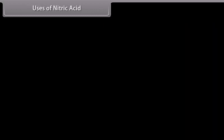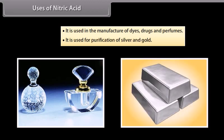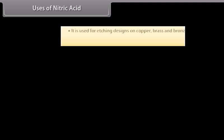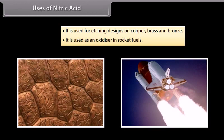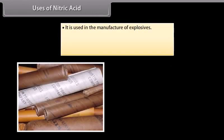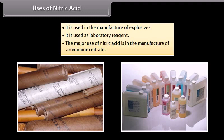Uses of nitric acid: It is used in the manufacture of dyes, drugs and perfumes. It is used for purification of silver and gold. It is used for etching designs on copper, brass and bronze. It is used as an oxidiser in rocket fuels. It is used in the manufacture of explosives. It is used as a laboratory reagent. The major use of nitric acid is in the manufacture of ammonium nitrate.